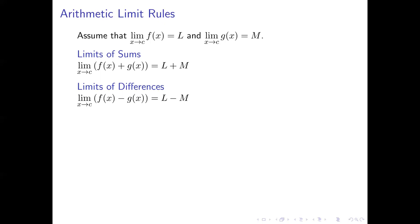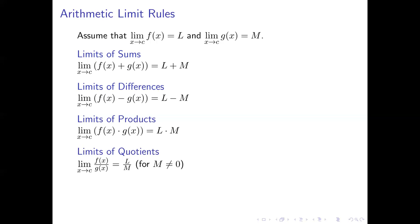There's also a product rule: the limit of f of x times g of x equals L times M. For quotients, the limit of f of x over g of x equals L over M, provided M is not zero — if it is, we need other methods. Finally, for powers: the limit as x approaches c of f of x raised to the power g of x equals L raised to the power M. That gives us five formulas for limits of arithmetic combinations of functions.